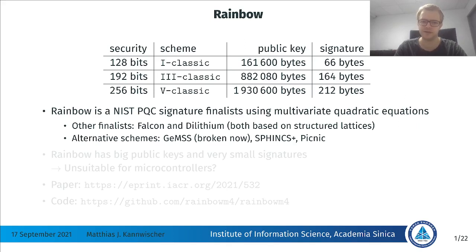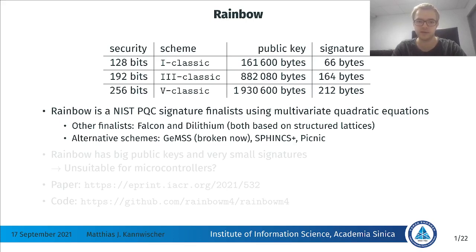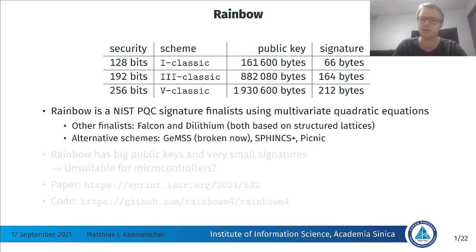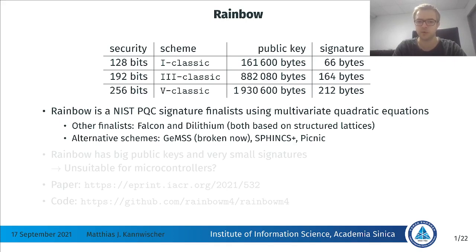Let me start by introducing Rainbow. Rainbow is a NIST-PQC secondary finalist, and it's based on multivariate critic equations. It's one of the three finalists in the NIST-PQC competition; the other finalists are Falcon and Dilithium, which are both based on structured lattices. Rainbow is the only one left that's based on MQ, and as such, it comes with quite different performance characteristics. The operations are quite different from the lattice-based schemes, so it's very interesting to look into how Rainbow performs compared to the other finalists.